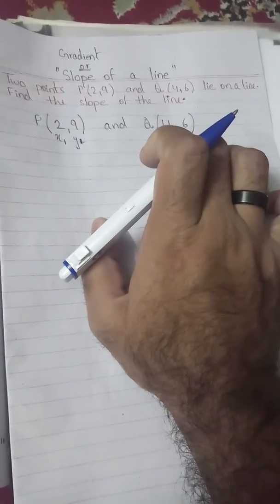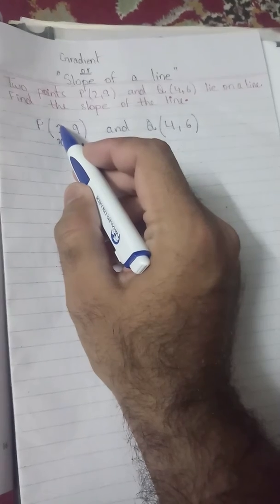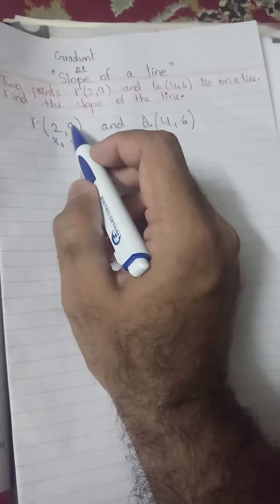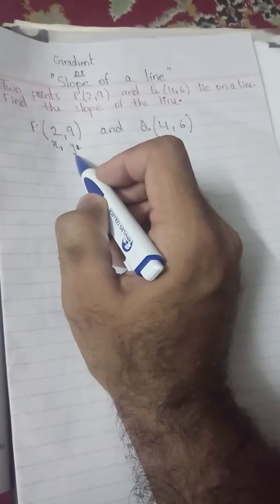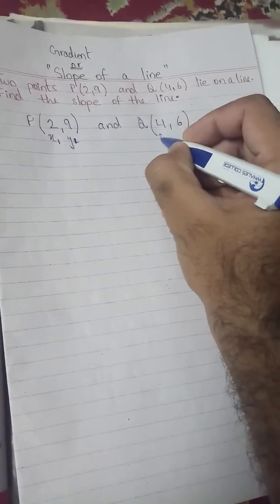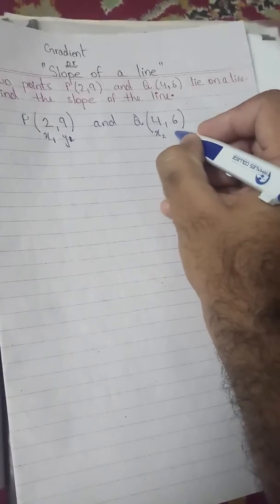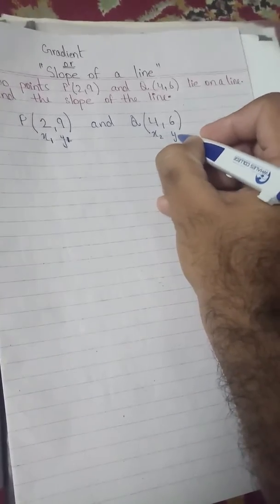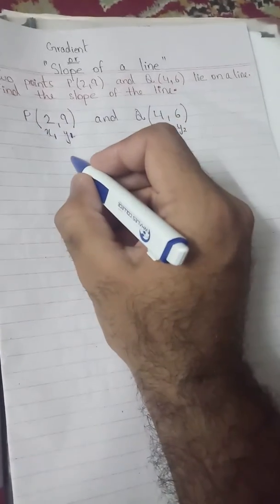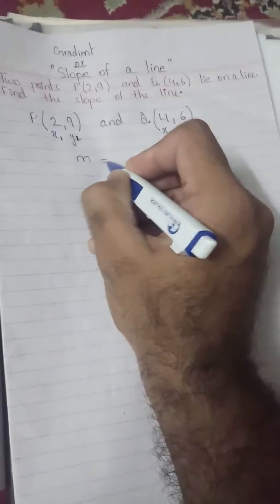After writing these two points, I will name them. The first X value of my first point is X1, and the Y value of my first point is Y1. Similarly, the X value of the second point will be X2, and the Y value of the second point will be Y2. Gradient or slope is denoted by M.